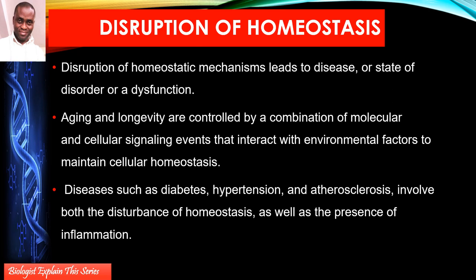Sugar is completely reabsorbed into the peritubular capillaries surrounding the proximal region. So the filtrate reaching the loop of Henle should not have sugar at all. If someone is urinating and sugar appears — what we call glycosuria — it is an indication that something is wrong, because sugar should not even appear in the filtrate reaching the distal convoluted tubule, let alone in the urine.